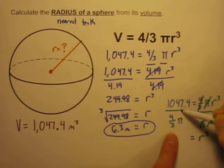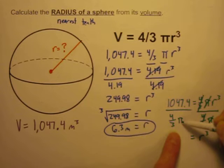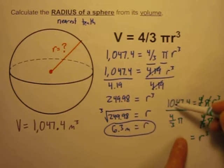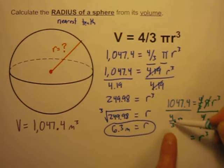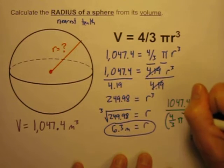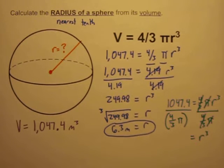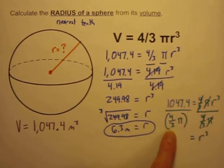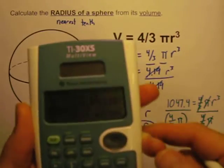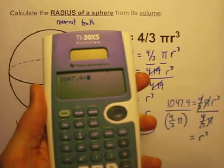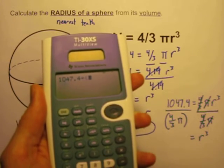So I'm left with r to the third power all by itself, and now over here I can do 1,047.4 divided by 4/3 and divided by π, but you have to be careful how you enter this. You either have to do 1,047.4 divided by 4/3 and then divided by π, or you have to group these together with parentheses. So order of operations then will multiply these together first to get a number before dividing it into 1,047.4. That's the method I'm going to use here.